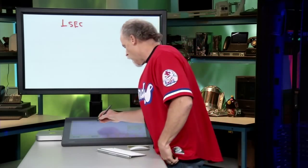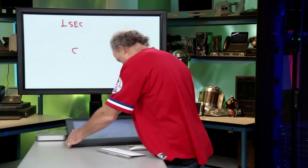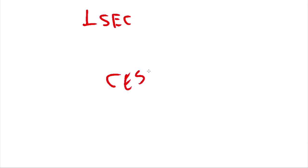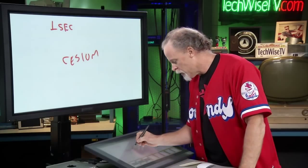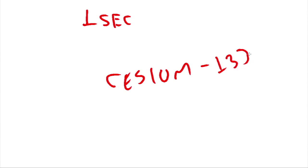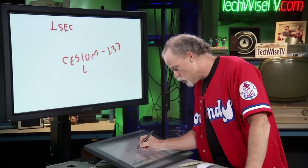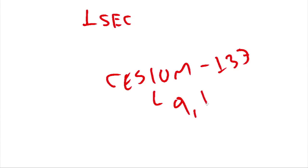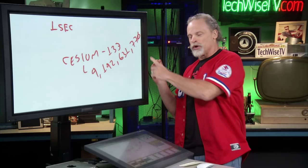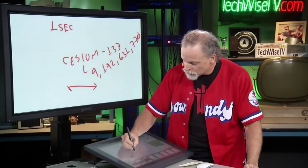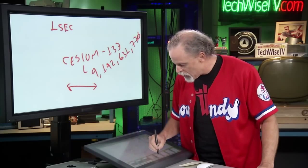If you look at the periodic table there are so many elements — which one are you going to use? We actually use an atom called cesium, cesium-133. One atomic second is actually equal to 9,192,631,770 oscillations — that's the oscillations of an electron in the outer valence.